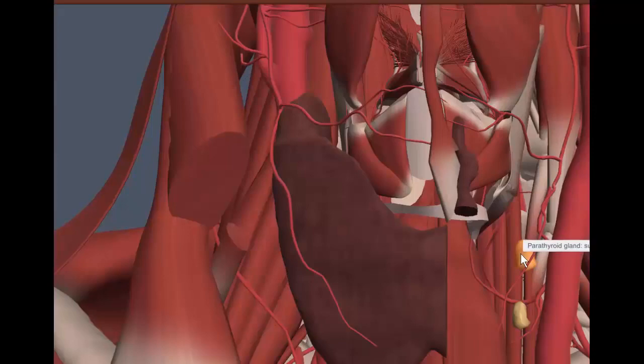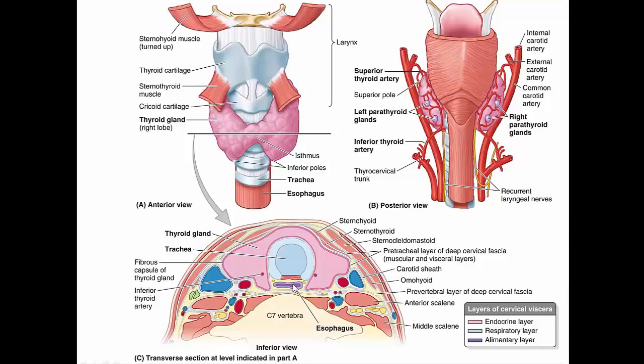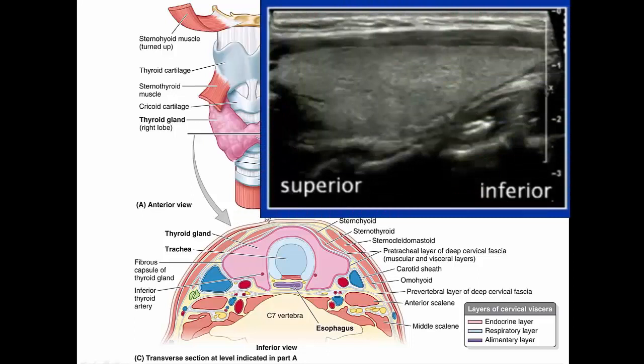Before moving on to the actual ultrasound scans, let's look at this image from Clinically Oriented Anatomy, 7th edition. A cross-sectional transverse view at approximately the C7 vertebral level shows the thyroid gland, the trachea, and further laterally the internal jugular vein and common carotid artery. If you place the ultrasound probe slightly off-center of the midline of the neck, you should be able to see the thyroid lobes, the associated strap muscles, and — moving a little further laterally — the IJV and common carotid artery.